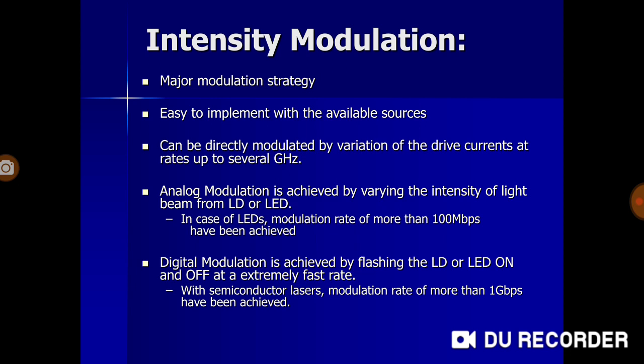The rate at which intensity modulation can be achieved is up to several gigahertz. For analog modulation, this is achieved by varying the intensity of the light beam from a laser diode or LED, and modulation rates of more than 100 Mbps have been achieved with LEDs. For digital modulation using intensity modulation, it is achieved by flashing the laser diode or LED on and off at an extremely fast rate, with semiconductor lasers achieving modulation rates of more than 1 Gbps.